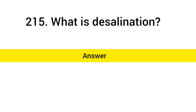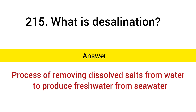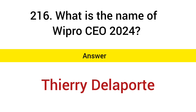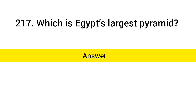What is desalination? Answer: Process of removing dissolved salts from water to produce fresh water from seawater. What is the name of Wipro CEO 2024? Answer: Thierry Delaporte.